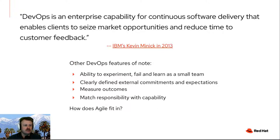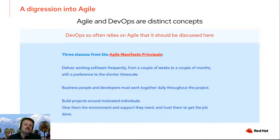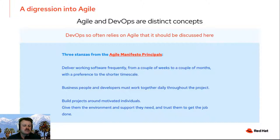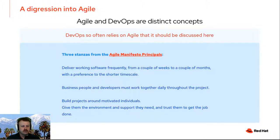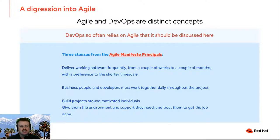How does Agile fit in here? Agile and DevOps are two distinct concepts, but DevOps very often relies on Agile — so the two should be discussed here, though their separation should also be acknowledged. Three principles from the Agile manifesto worth pointing out: first, deliver working software frequently — from a couple of weeks to a couple of months, with preference towards the shorter timescale; second, business people and developers must work together daily throughout the project; and third, build projects around motivated individuals, give them the environment and support they need, and trust them to get the job done.